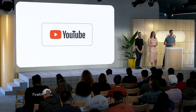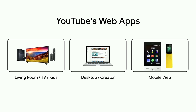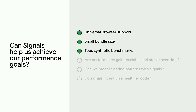Signals meet all the prerequisites of YouTube's platforms. They need to support many different browsers and devices — from Shorts running on mobile to web apps on smart TVs with YouTube Living Room. The bundle size of signals is small, meeting requirements for YouTube's mobile web traffic where most users are on slow network connections. Signals top every single synthetic benchmark the YouTube team came up with. The YouTube team kicked off projects to answer big questions: are the performance gains scalable with large, messy codebases? Can existing problems be modeled with signals naturally? And do signals lead to better code?